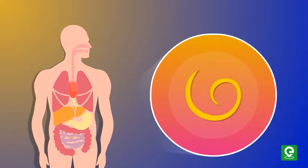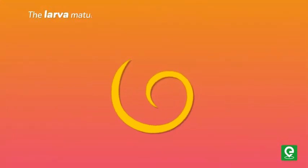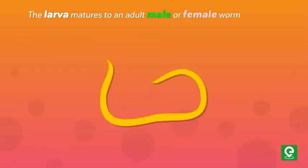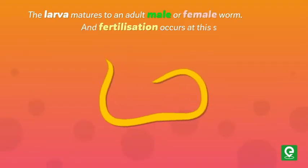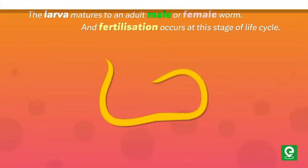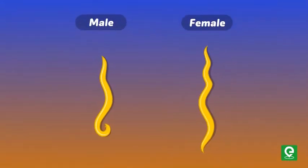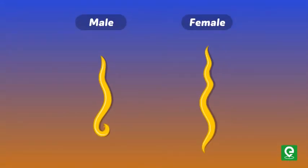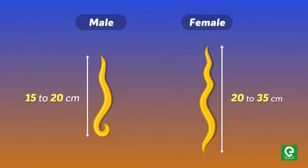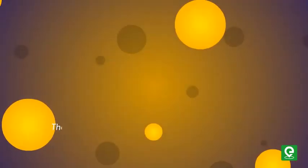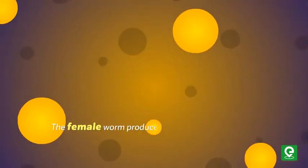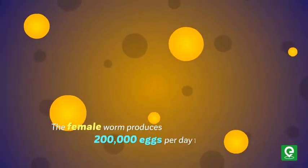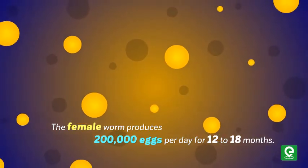In the small intestine, the larvae mature into adult male or female worms and fertilization occurs at this stage of the life cycle. The male worm is smaller in size than the female Ascaris worm. Male worms are 15–20 cm in length while females are 20–35 cm in length.